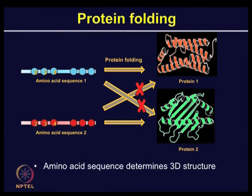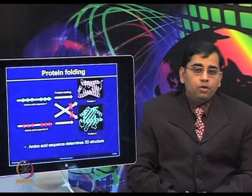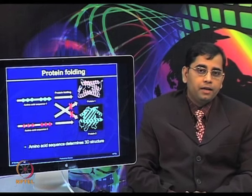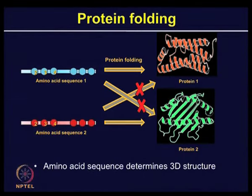The proteins have very high specificity. If you have amino acid sequence one, shown in blue color, that will form protein one. If you have amino acid sequence two, shown in red, that will form protein two. If you take amino acid sequence one, protein two cannot be generated. Similarly, if you take amino acid sequence two, protein one cannot be generated. So, there is very high specificity of amino acid sequence which can determine the three-dimensional structure of proteins.